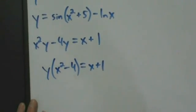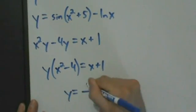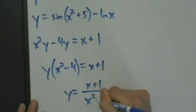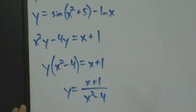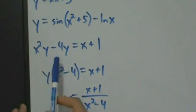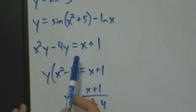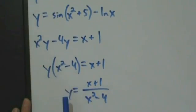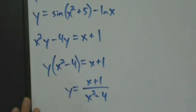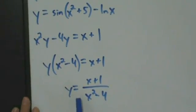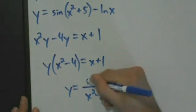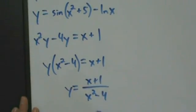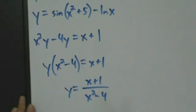Divide both sides by x squared minus 4, and then y equals x plus 1 over x squared minus 4. So here in its original form it didn't look explicit at first glance, but we could actually solve for y and we have this unique answer. So y can be explicitly expressed as this function of x: x plus 1 over x squared minus 4. These are all examples of explicit functions — the kind of stuff we've been looking at so far, where we can always say y equals some function of x.